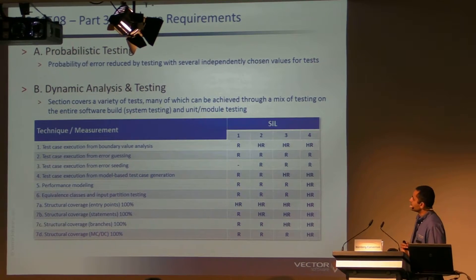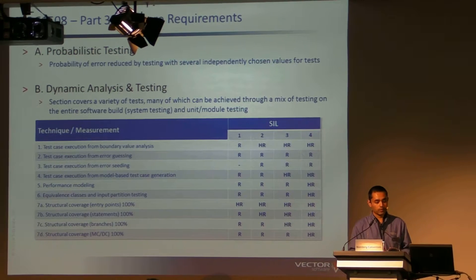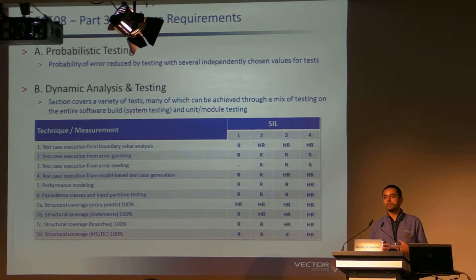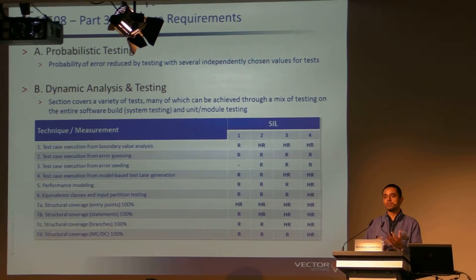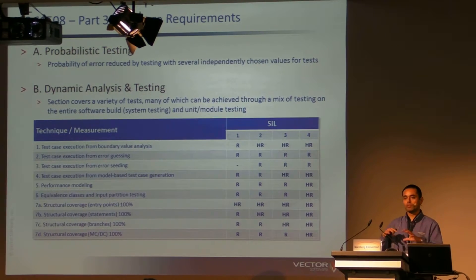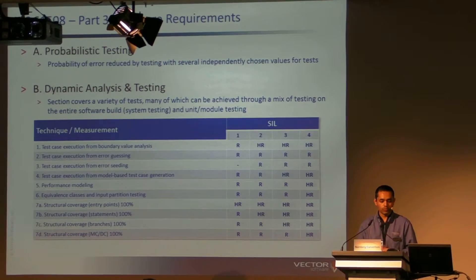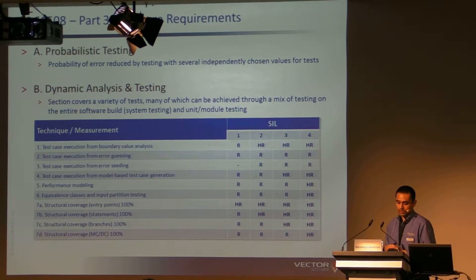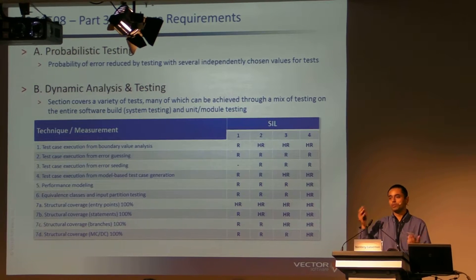The second one is test case execution from error guessing. These test cases are based on testing experience and intuition combined with knowledge and curiosity about the system under test. So if you're a tester and you're building a railway system or a measurement system and you have some experience about the behavior of the system, use that knowledge to come up with interesting test scenarios. Using your knowledge about the overall product you're building to come up with test cases that can improve the validation. This activity can also be performed at the system level, but there's a value in performing this at the unit level as well — you have the ability to create scenarios which may be much harder or unrealistic to create at the system level.